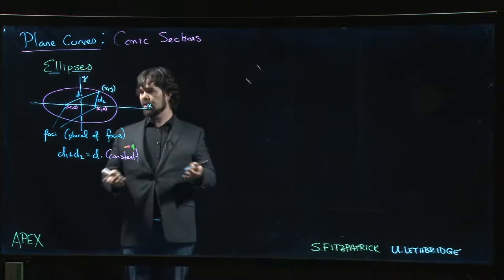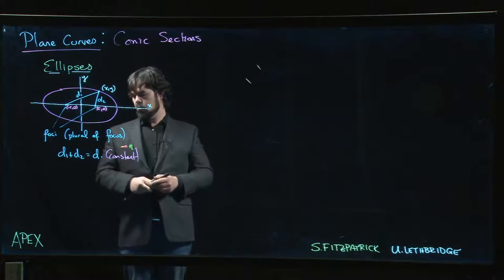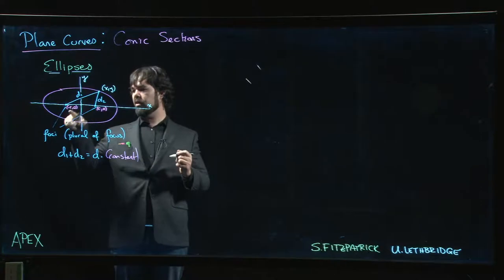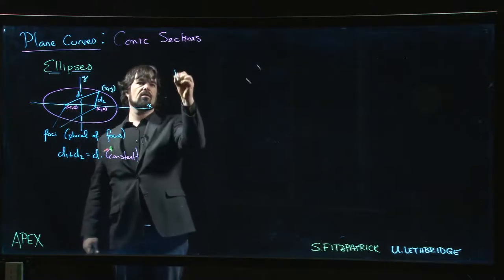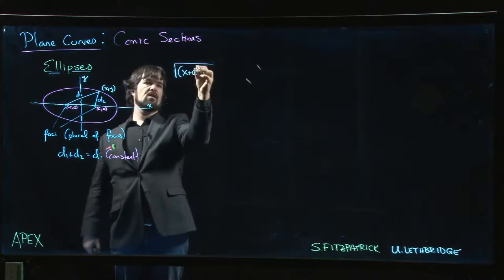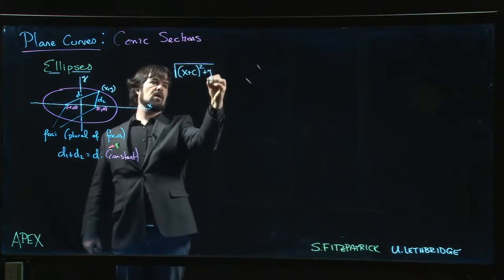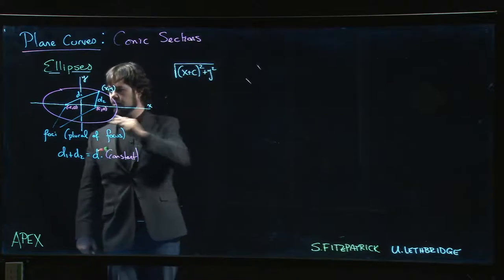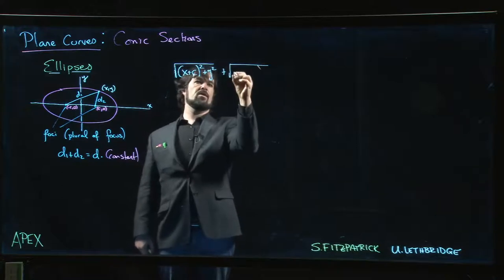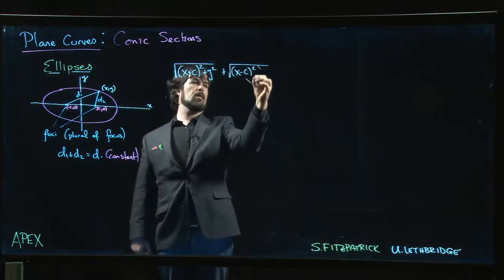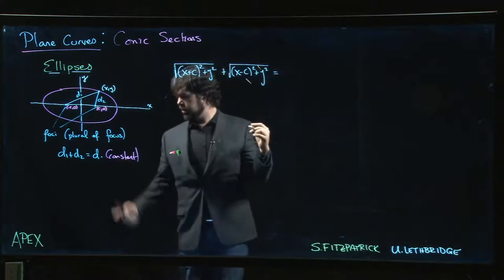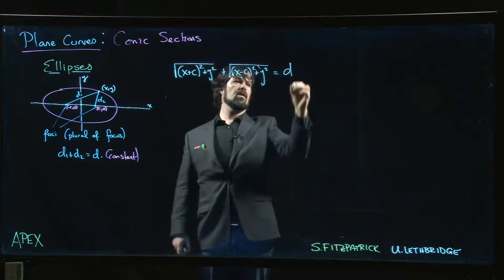With that coordinate system, we can say, what does this definition lead to? What kind of equation does it lead to? Well, the distance between this point and the first focus: we have x minus (-c), so x + c for the difference in the x coordinates, and then simply y squared, because we have y equal to zero there. That's d1. d2 will be (x - c)² + y². And we want that to be equal to this constant distance d.